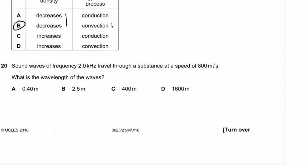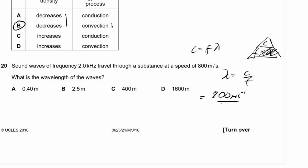Question 20. Sound waves of frequency 2 kHz travel through a substance at 800 m/s. What is the wavelength? Using c = fλ: wavelength = c / f = 800 / 2000 = 0.4 m. Answer A.